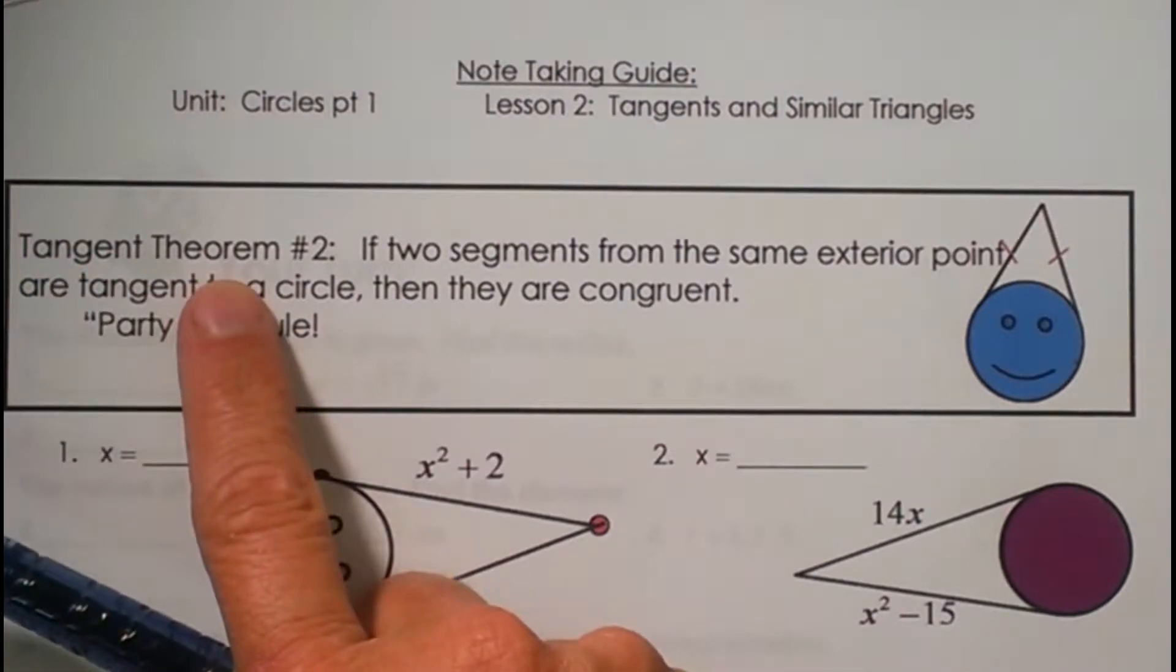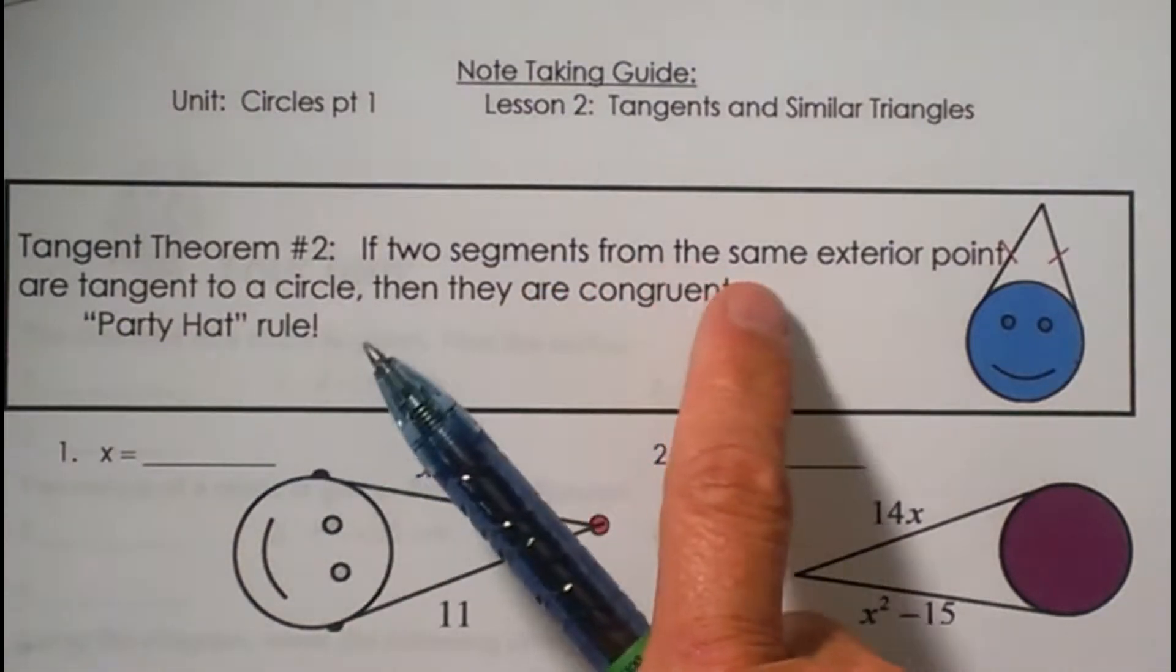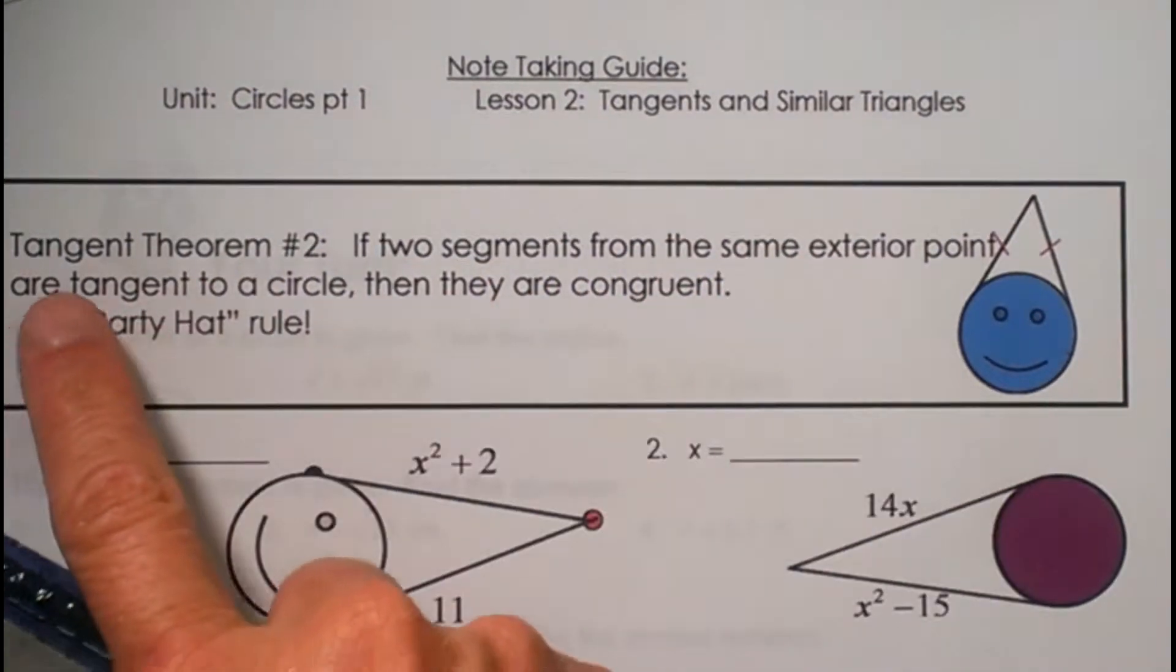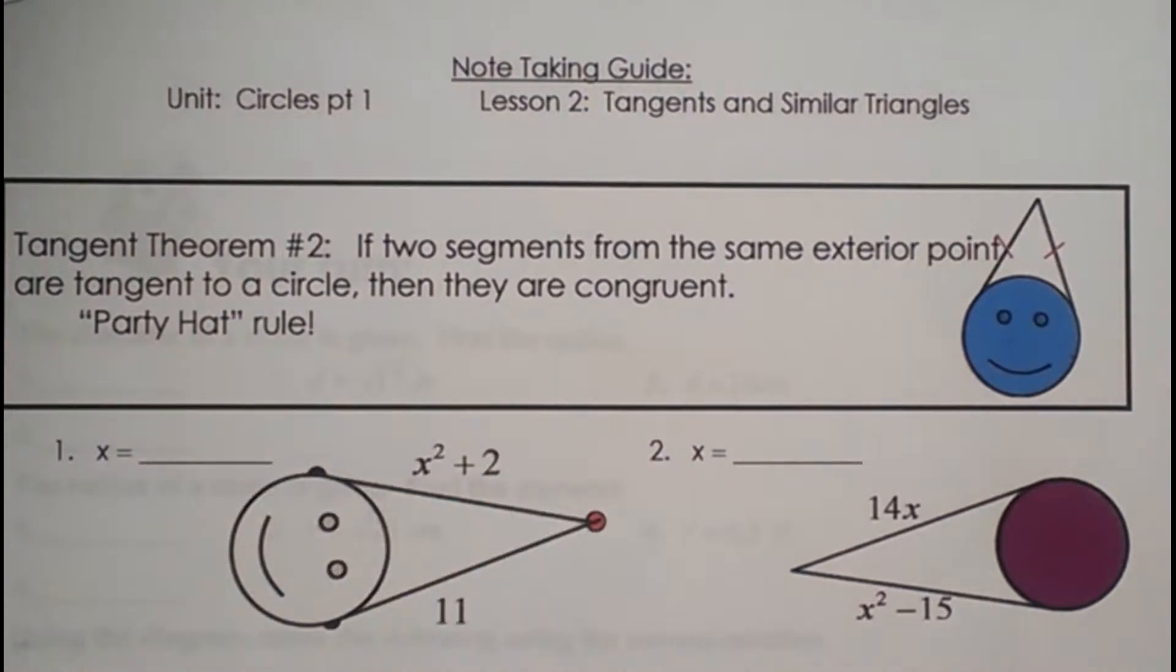We're looking at Tangent Theorem number 2. It says if two segments from the same exterior point are tangent to a circle, then they're congruent. So let's see what that means.